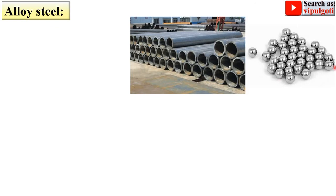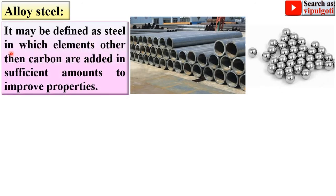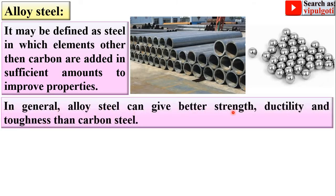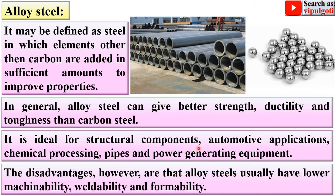Alloy steel may be defined as steel in which elements other than carbon are added in sufficient amounts to improve properties. In general, alloy steel can give better strength, ductility, and toughness than carbon steel. It is ideal for structural components, automotive applications, chemical processing pipes, and power generating equipment. However, the disadvantage of alloy steel is that it usually has lower machinability, weldability, and formability.